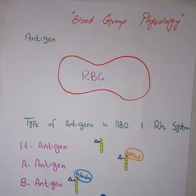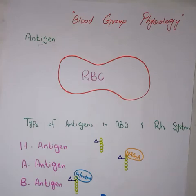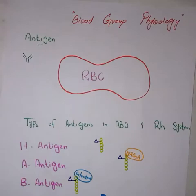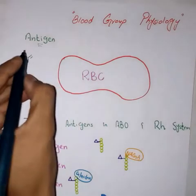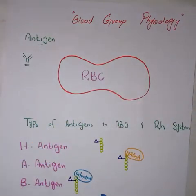To understand the blood group system effectively, first of all you must know what an antigen is. An antigen is any substance that can stimulate your immune system — any substance against which your immune system and your B cells will start making antibodies. This is a structure of an antibody. So any substance against which your body will start making antibodies will be called an antigen.